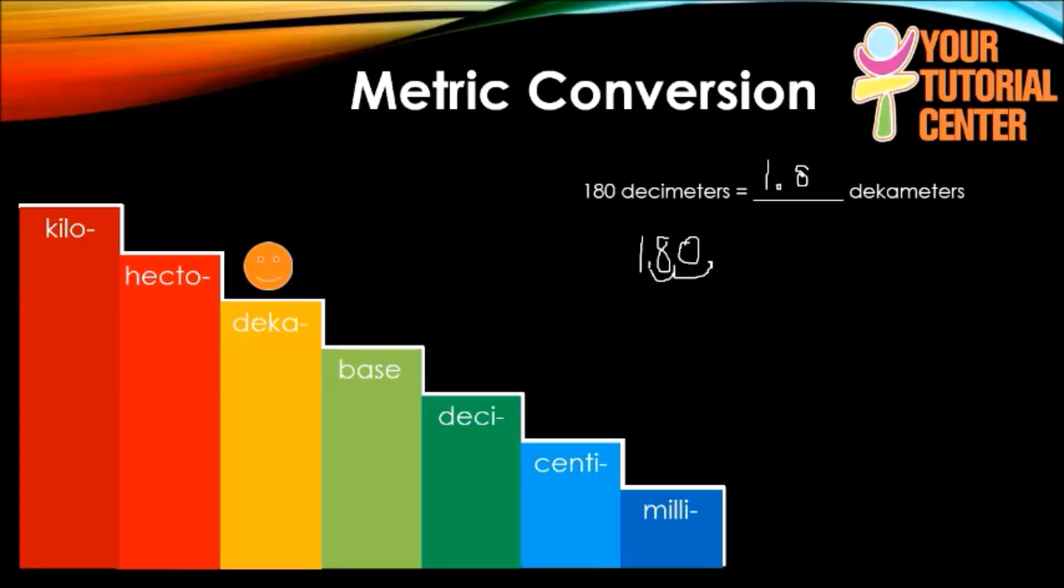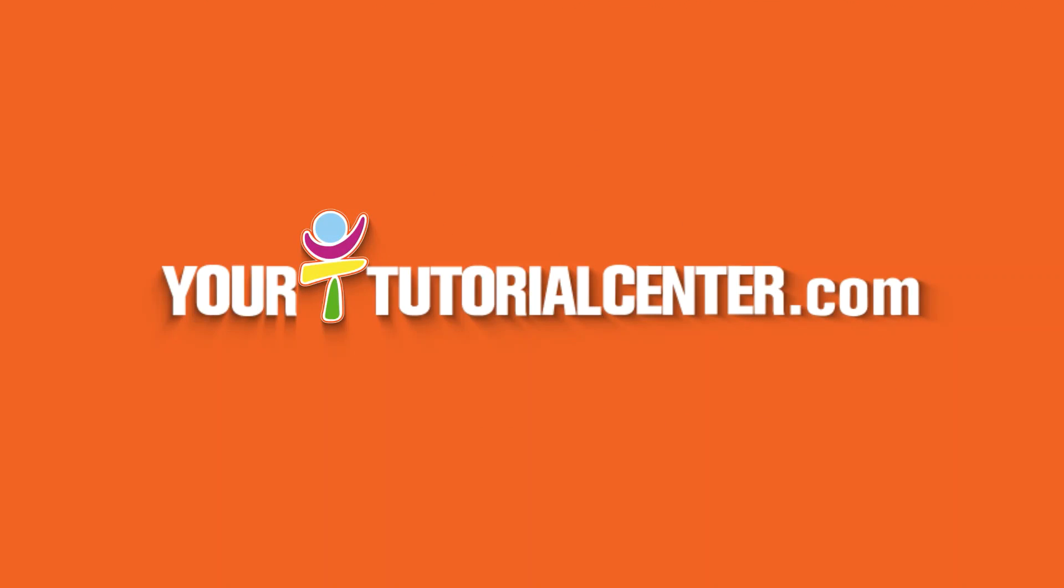That's how we use the ladder method in converting metric units. You just need to know how many places you need to move from one of the prefixes to another, and then we also do that to the decimal point on the given number.